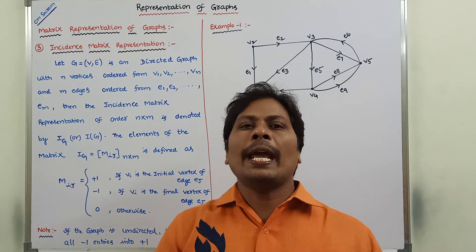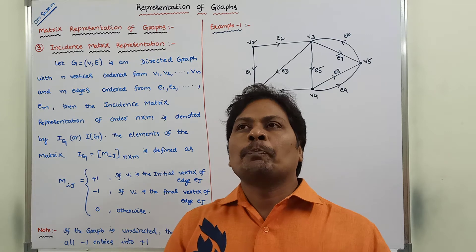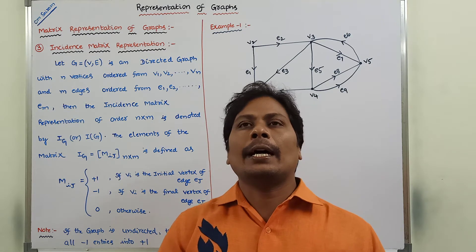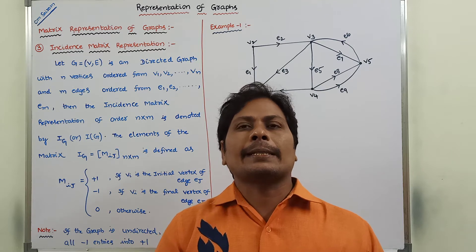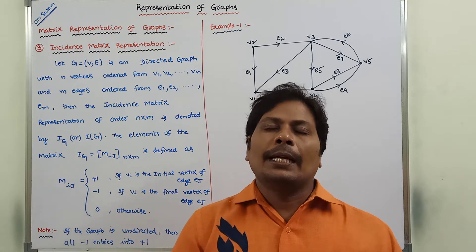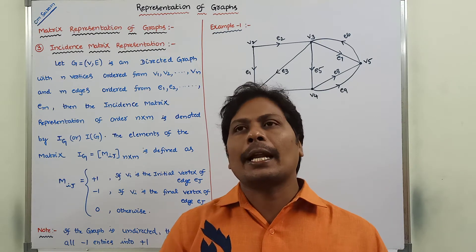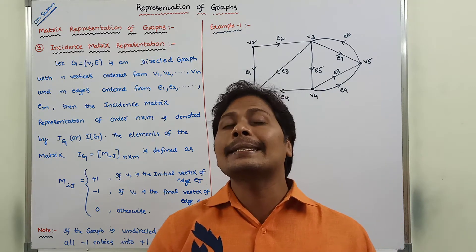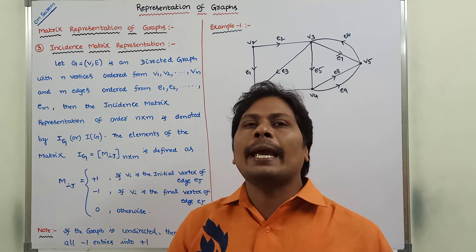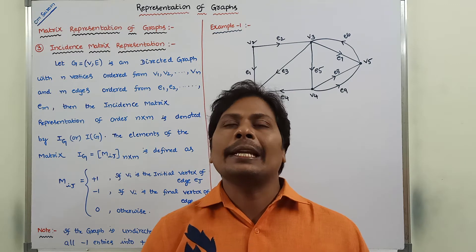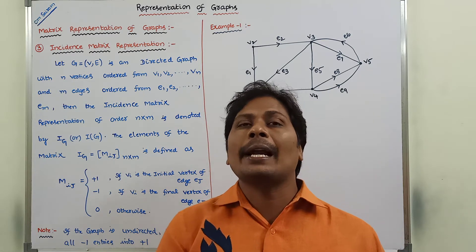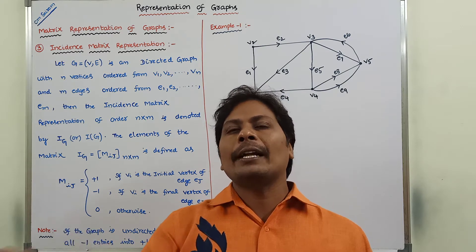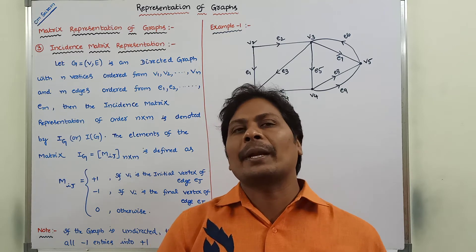Hi friends, today I am giving a lecture on representation of graphs. In the representation of graphs, there is one type called matrix representation of graphs. In the matrix representation of graphs, there are two types: one is adjacency matrix representation and the second one is incidence matrix representation. In the case of adjacency matrix representation, again it is two types: adjacency matrix representation for undirected graphs and adjacency matrix representation for directed graphs — that we have discussed in the previous video.